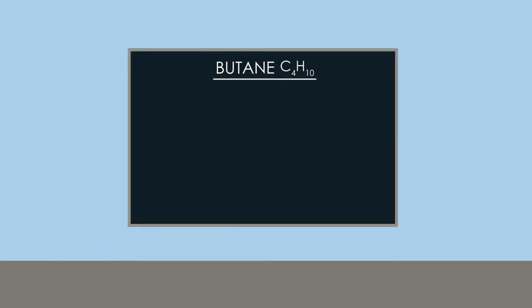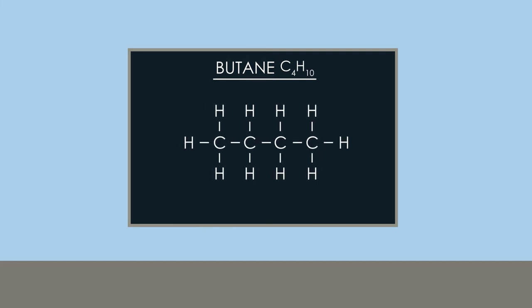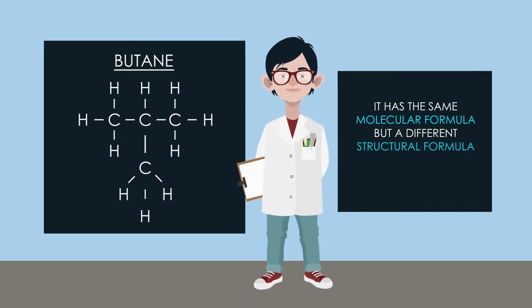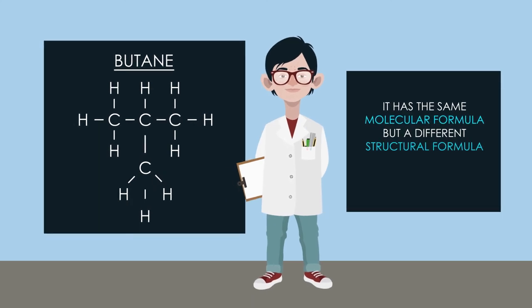I expect most of you have drawn a straight chain molecule like this. However, there is another way of arranging the atoms. It has the same molecular formula but a different structural formula. These two forms of the molecule C4H10 are called structural isomers.